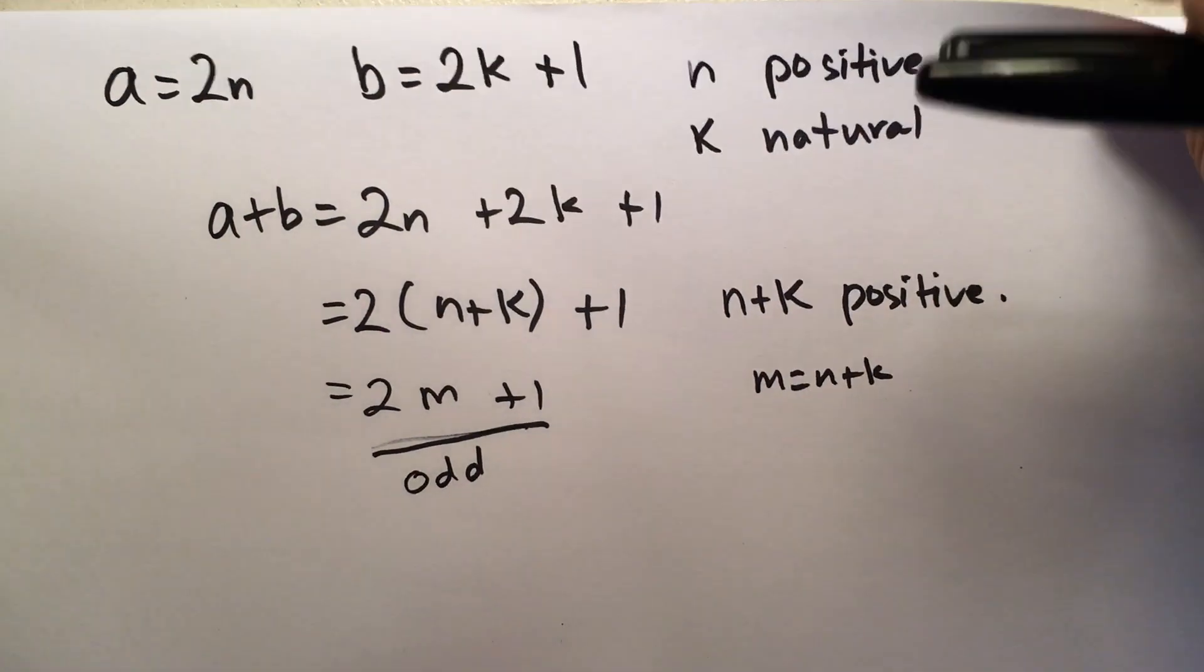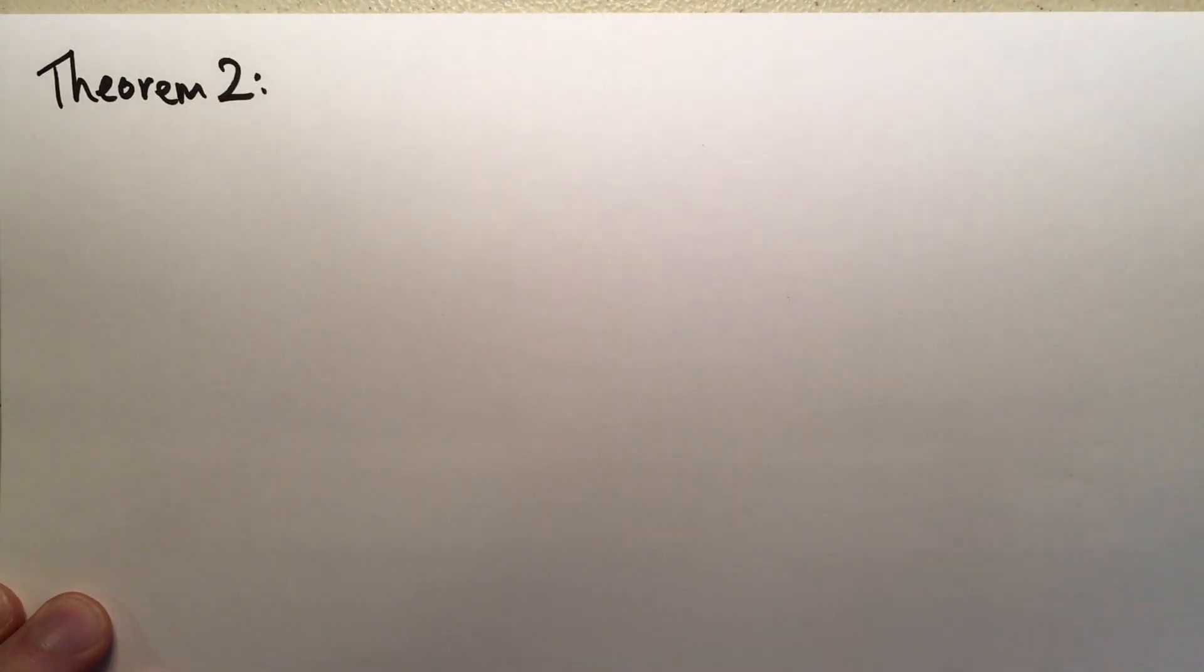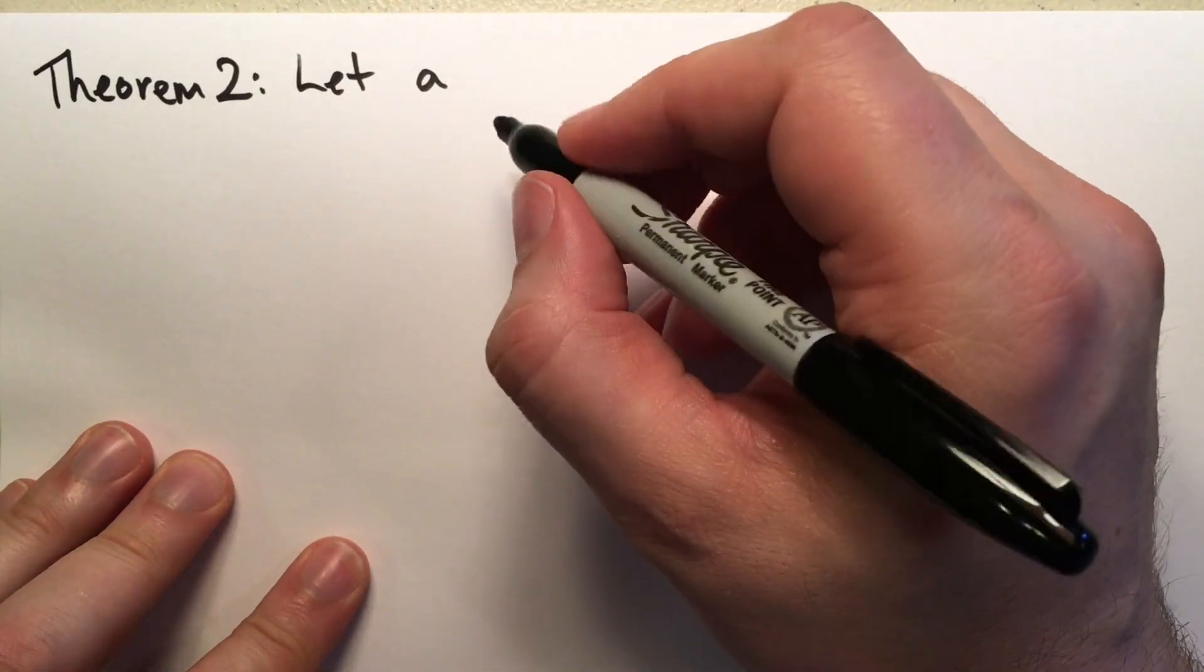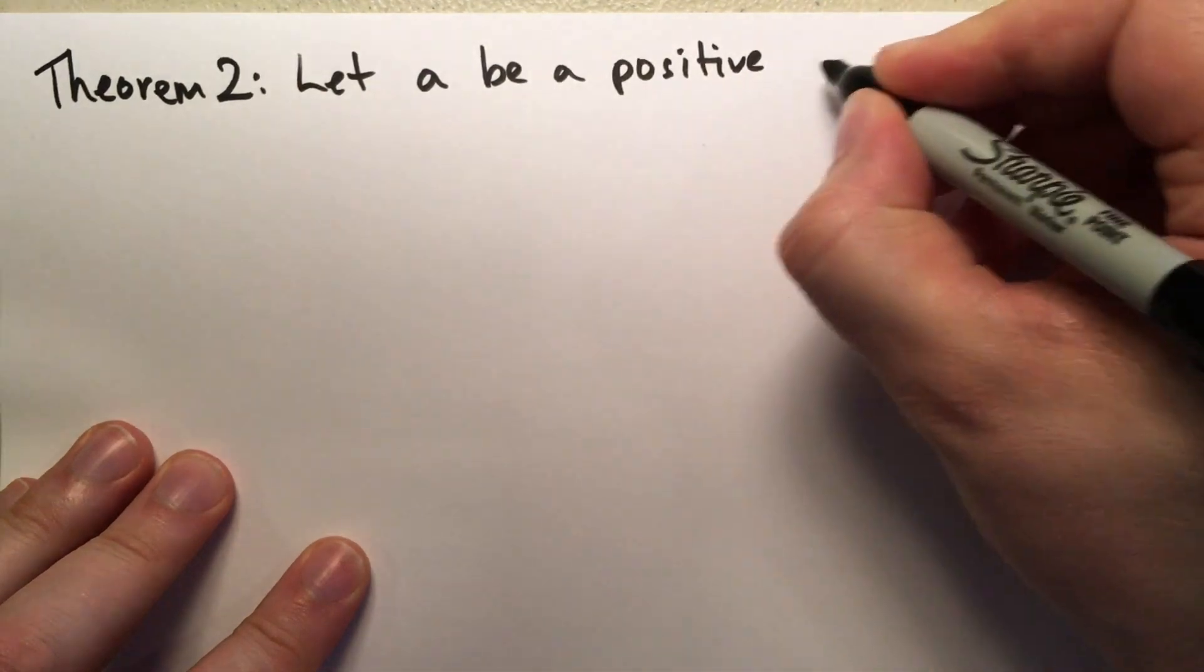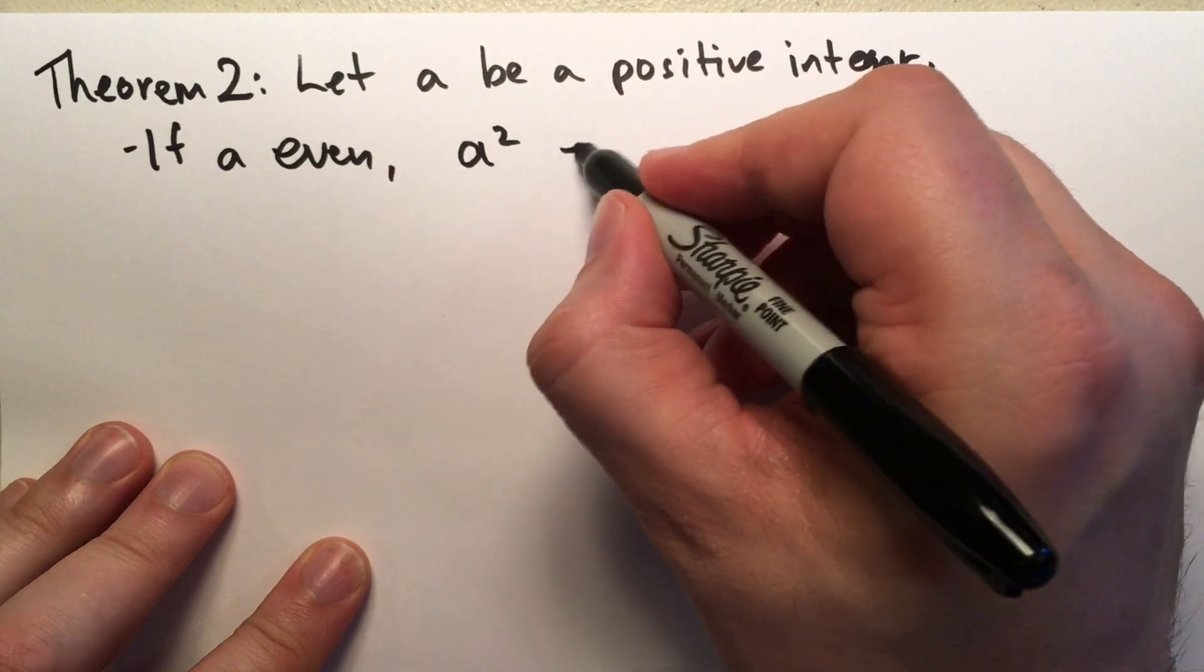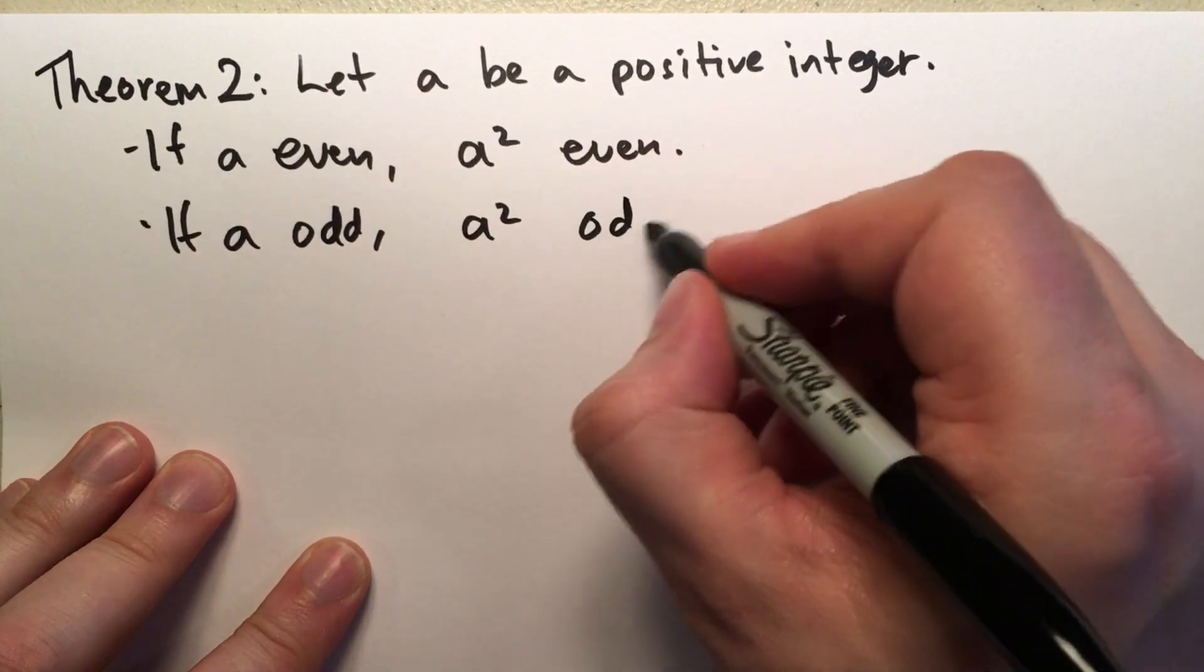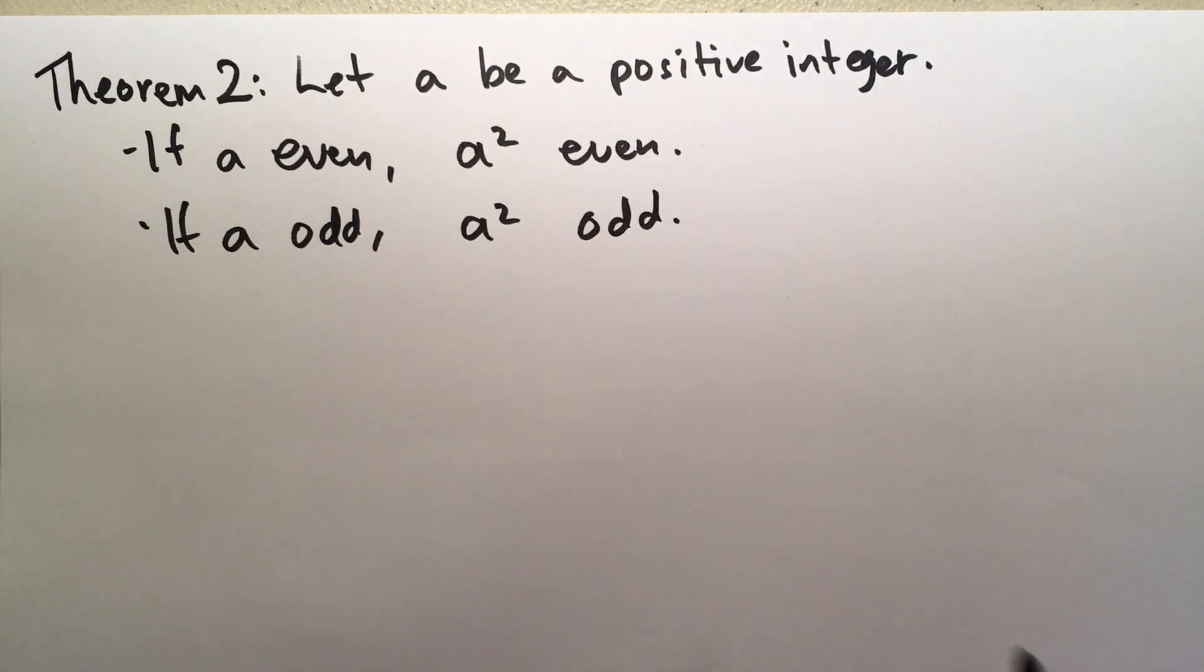Let's do Theorem 2. Theorem 2 talks about squares. It says, let A be a positive integer. If A is even, then A squared is also even. And if A is odd, then A squared is odd. And we'll prove both of these.